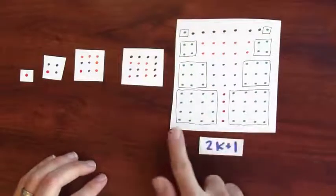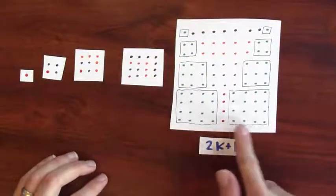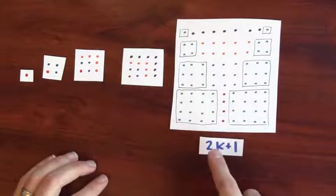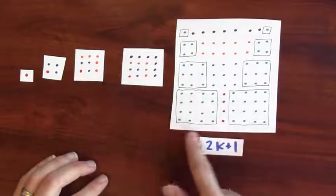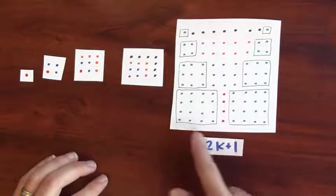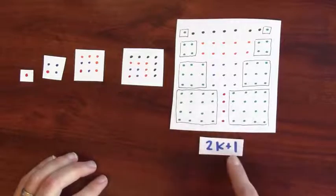Well, the bottom here, this is a k by k square, k by k square, and these are built out of the corners. They're just one dot. So this whole bottom side is made up of 2k plus 1 dots. k plus 1 plus k, or 2k plus 1.